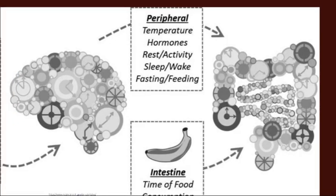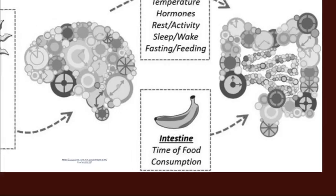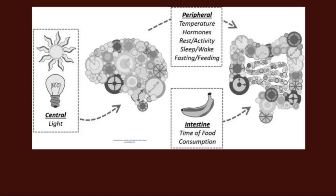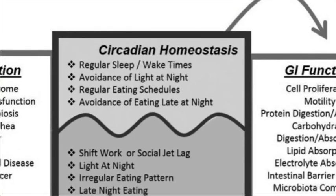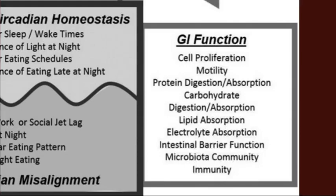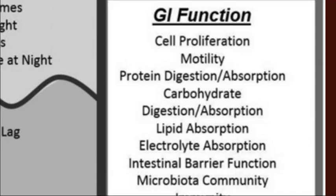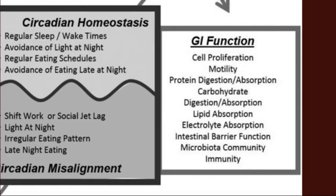It's not time to be digesting food at night. Similarly, food itself sends a message — when food comes in it triggers the gut to start doing what it's supposed to be doing, taking messages from both the brain and from food and activities. When our circadian rhythms are in homeostasis — meaning regular sleeping and waking times, avoiding light at night, regular eating schedules, and avoiding eating late at night — the gastrointestinal tract performs cell proliferation, motility, digestion of proteins, carbs, and fats, immunity, and the gut microbiota works properly.